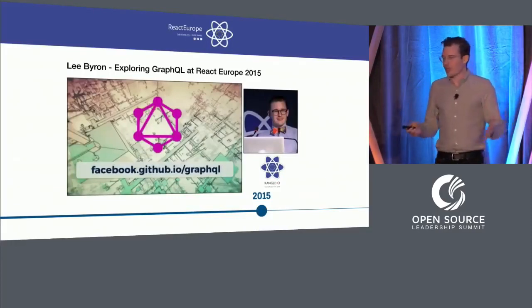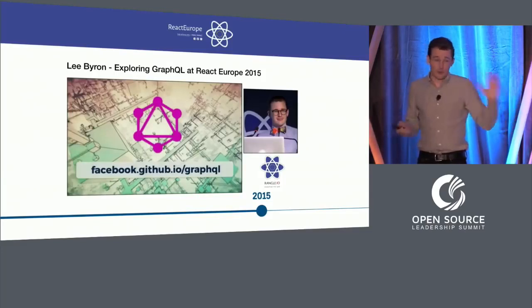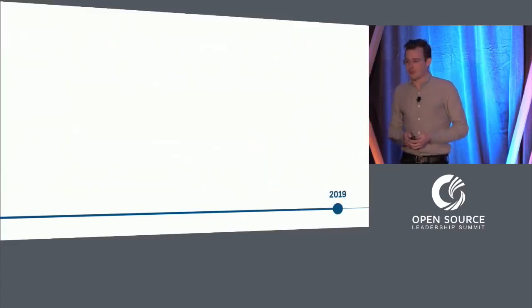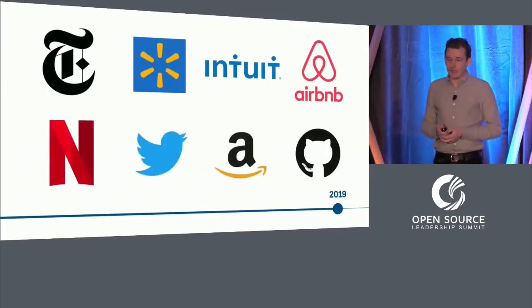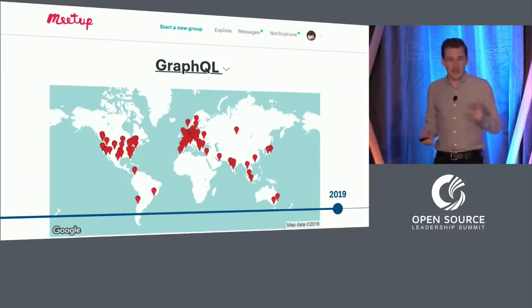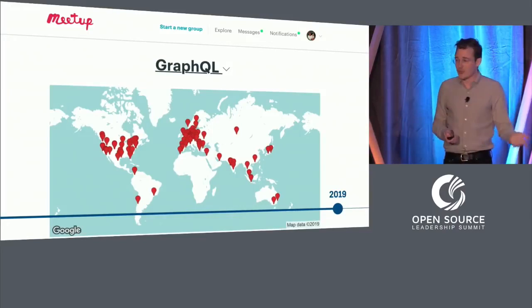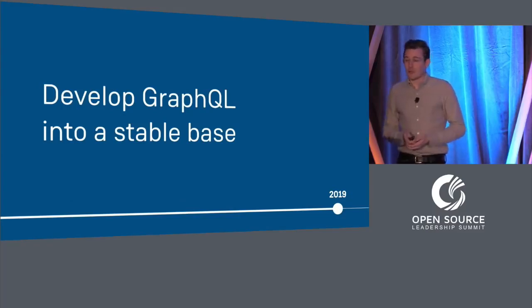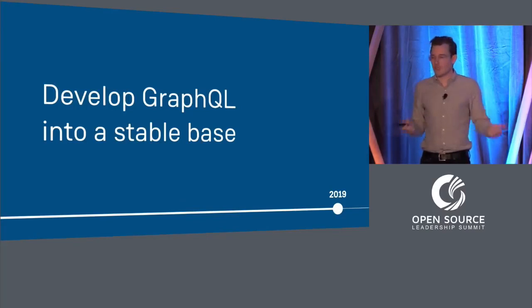We shared the specification and called on the community to help write implementations in their back-end language of choice — totally a Hail Mary pass. But by the end of the year, six such projects were already in the works, and today GraphQL implementations are available in over a dozen different popular languages, all managed by different community members. The GraphQL community quickly grew from hobbyists to real companies, including the New York Times, Walmart, Intuit, Airbnb, Netflix, Twitter, Amazon, GitHub, and many more. The community is worldwide, with meetups on every continent and major conferences in America, Europe, and Asia. Today, GraphQL has been open-source much longer than it was internal to Facebook, and the last four years have shown that my early skepticism was unwarranted.